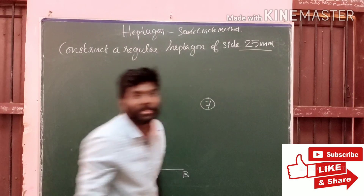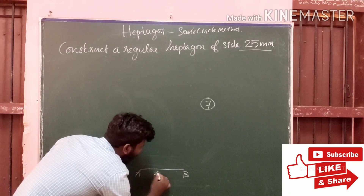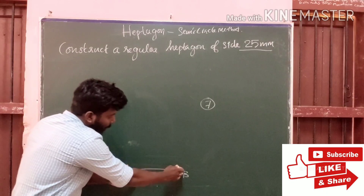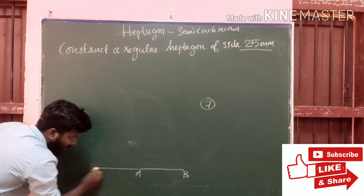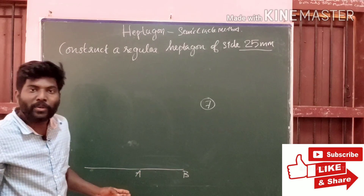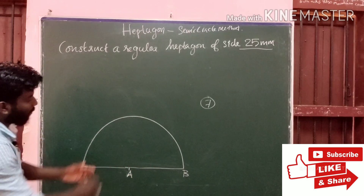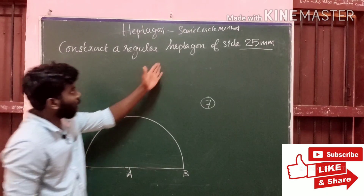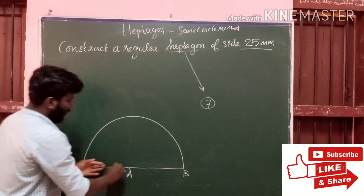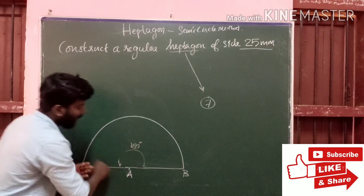You can specify a hexagon of 25mm. So we have a line in 25mm. If you have a hexagon, we have a hexagon. Then we have a semicircle. We have a hexagon. Heptagon is hexagon. If this is a hexagon, this is a hexagon.